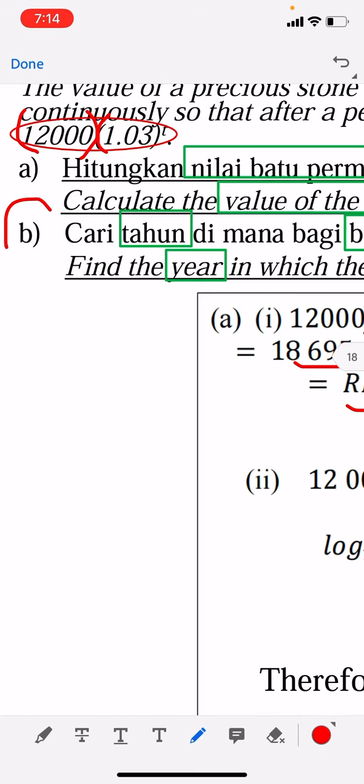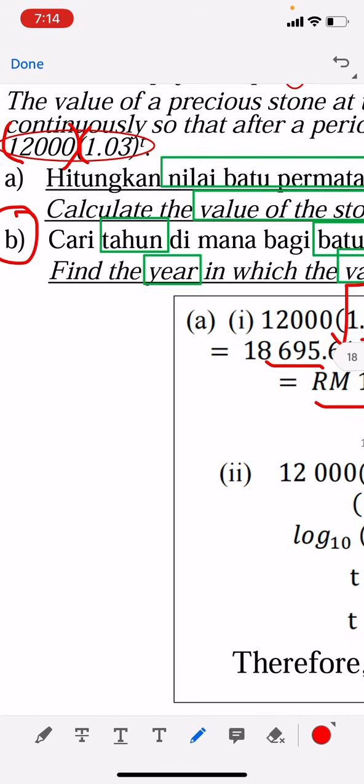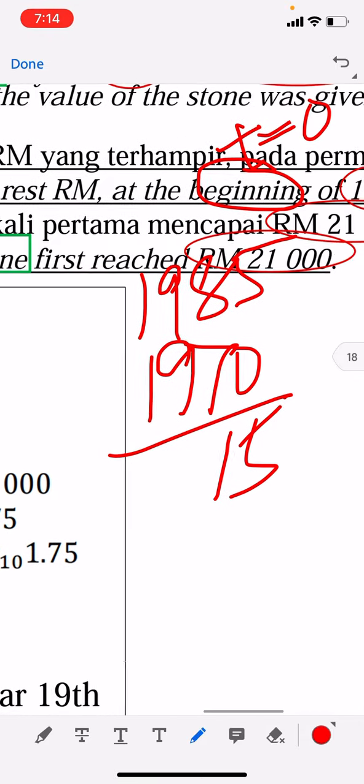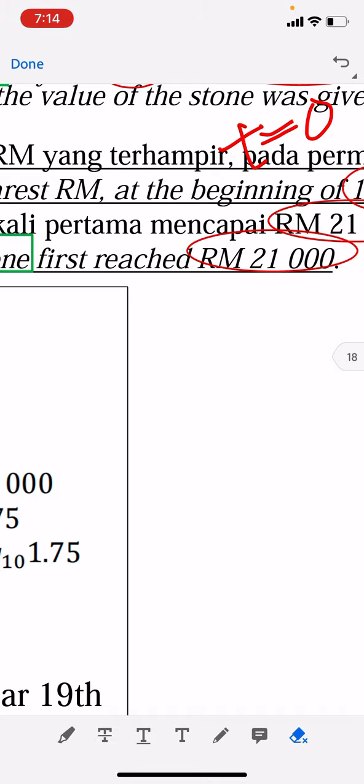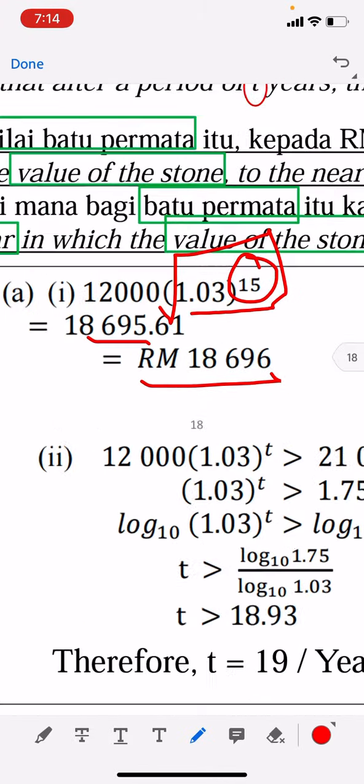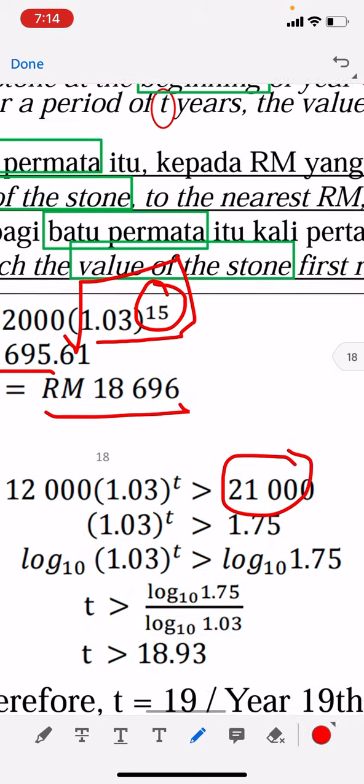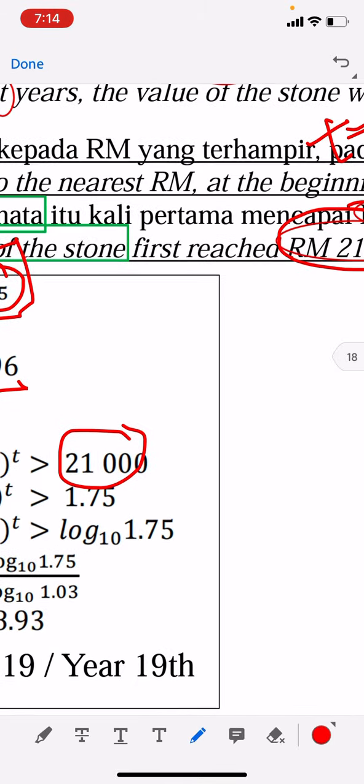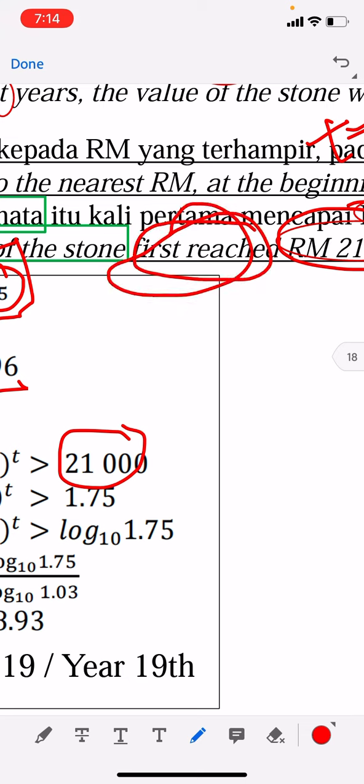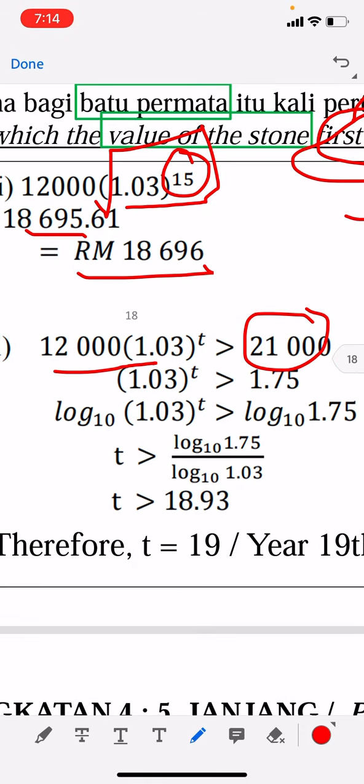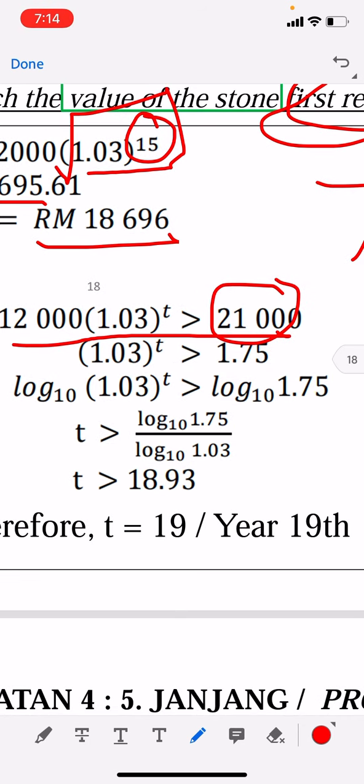For part b, there is always a part where you have to use logarithm. Find a year in which the value of the stone reached 21,000. So this 21,000, you have to substitute over here - at least. Reach means it can be more than 21,000. The word reach means at least, not inclusive. So you substitute into the function: 12,000(1.03)^t > 21,000. If you solve it, your time should be greater than 18.93.